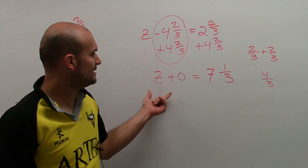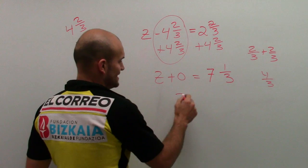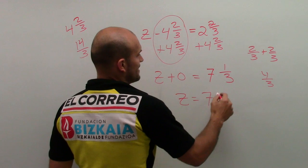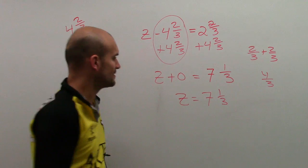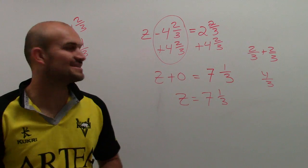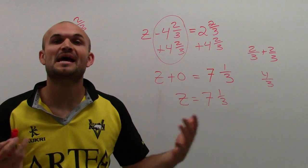So then, z plus 0 is just z. So z equals 7 and 1 third. And there you go. That's how you solve when using even mixed numbers.